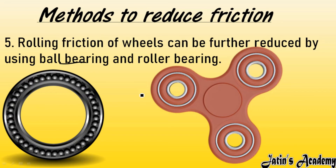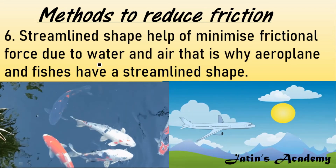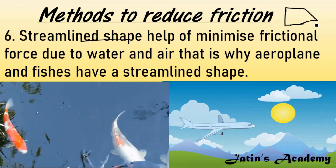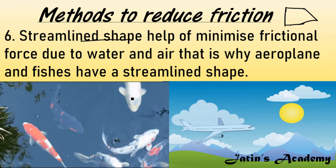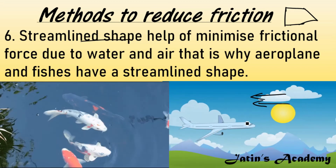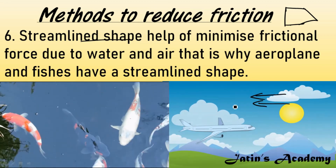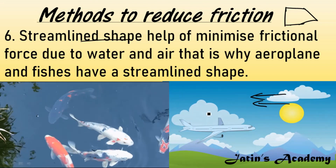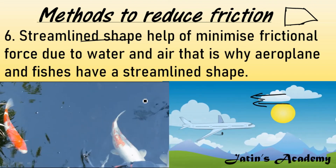An important method is making bodies streamlined in shape — broad at the back and narrow at the front, like the shape of a fish or an airplane. When a plane moves through the sky, air exerts a frictional force on it, slowing its motion. The streamlined shape reduces this friction by cutting through air particles efficiently, which is why streamlined shapes are used in various bodies to reduce friction.